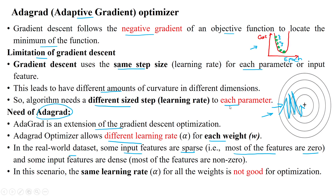In real-world datasets, a few input features are sparse — meaning most of the features will have values of zero. For example, with input features x1, x2, ..., xn, most features may have the value zero. These types of features are called sparse input features. Features with non-zero values, like 1, 2, or 0.1, are called dense features.